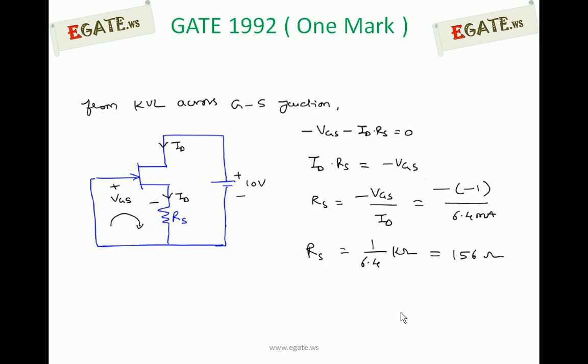Now apply KVL across gate source junction. This is gate and it is source. The voltage across this one is VGS. The same current flowing through drain is also flowing through source, that is 6.4 mA, also flowing through RS. Apply KVL: minus VGS minus ID into RS equals zero. So ID into RS equals minus VGS. RS equals minus VGS by ID. VGS is minus 1 volt, minus of minus is plus 1. 1 by 6.4 kilo ohms which equals 156 ohms.